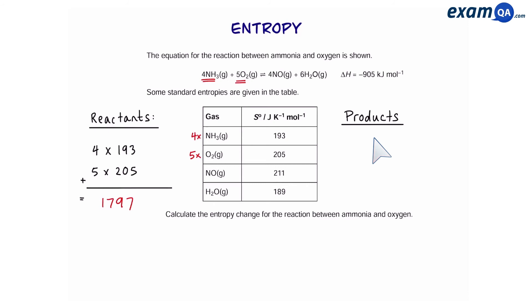Moving on to the products, we're going to do four times nitrogen monoxide which is four times 211 plus six times water which is six times 189. This gives us 1978. So we're going to use this equation and plug in our numbers. And the final answer is positive, that means the reaction has become more random. And the final answer is plus 181. Notice the units are joules per kelvin per mole. Also entropy is positive in this reaction, meaning that we have increased the disorder of particles.